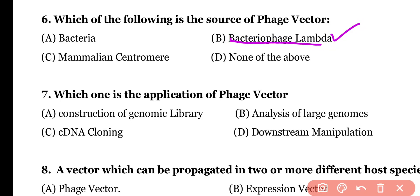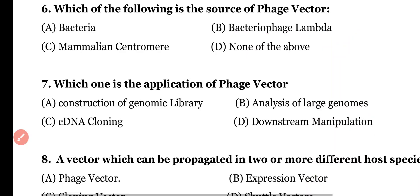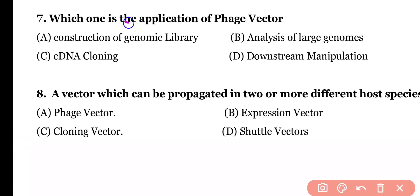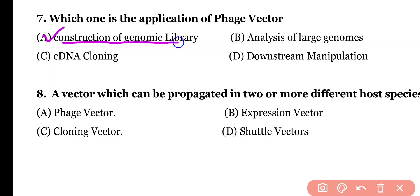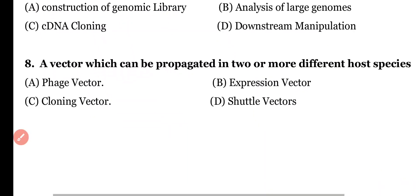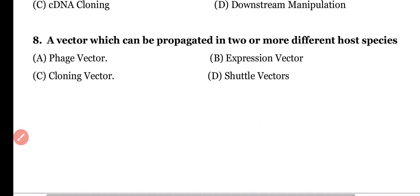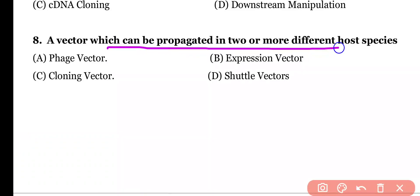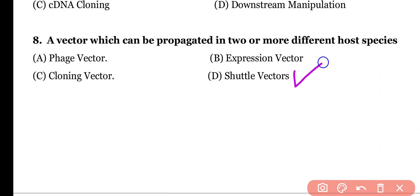A phage vector is obtained from bacteriophage lambda virus. Question 7: Which one is the application of a phage vector? Construction of genomic library, analysis of large genome, cDNA cloning, or downstream manipulation. Correct answer is option A. Phage vector is used for the construction of genomic library. Question 8: A vector which can be propagated in two or more different host species is known as: phage vector, expression vector, cloning vector, or shuttle vector. Correct answer is option D.